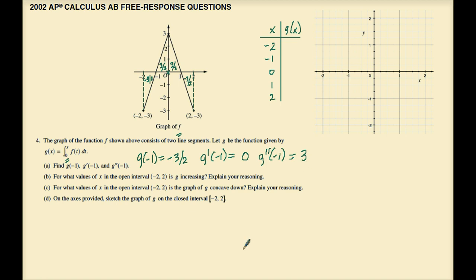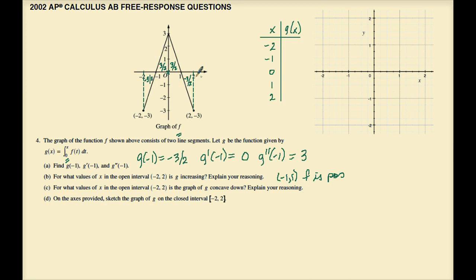Part b: for what values of x in the open interval from negative 2 to 2 is g increasing? Since g is the integral of f, g is increasing where f is positive — on the interval from negative 1 to 1. Part c: for what values of x in the open interval from negative 2 to 2 is the graph of g concave down? g is concave down where the derivative of f is negative — where the slope is negative on f — which is from 0 to 2. Therefore g is concave down from 0 to 2, because f prime is negative there.